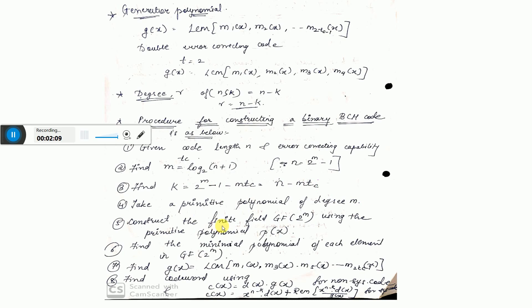Construct the finite field GF(2^M) using the primitive polynomial P(X). Find the minimal polynomial of each element of GF(2^M). Find G(X) = LCM of M1(X)·M3(X)·M5(X) up to M(2T_C - 1)(X). The last step is to calculate the BCH codeword. Codewords are of two types: systematic and non-systematic. For systematic code, C(X) = D(X)·G(X). For non-systematic code, C(X) = X^(N-K)·D(X) plus the remainder of X^(N-K)·D(X) divided by G(X).